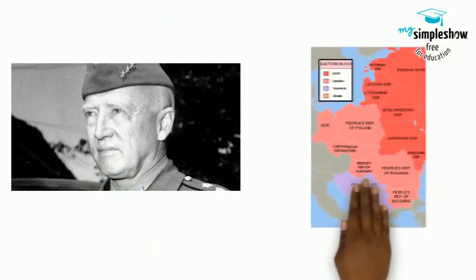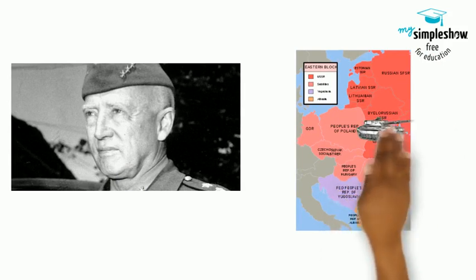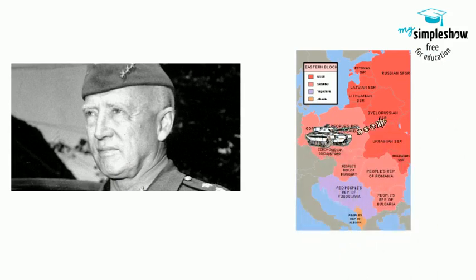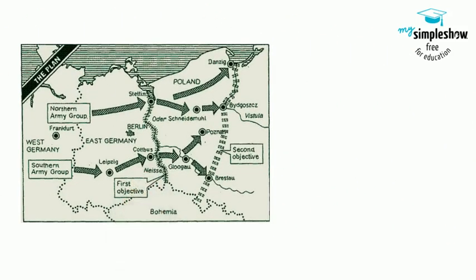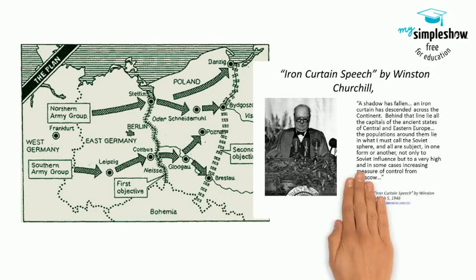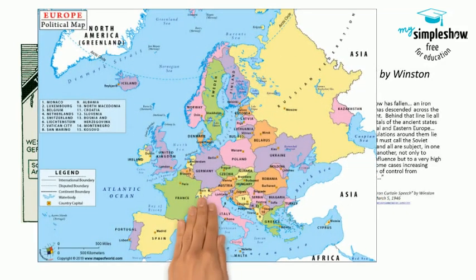General George S. Patton had been removed from leadership by General Eisenhower for calling on America to turn the military already in Europe on the Soviets. The British themselves had a plan called Operation Unthinkable that also called for an attack on the USSR to push them out of Eastern Europe. However, most people in the world didn't have the stomach for a third major war in less than 30 years, and stalemates set in. Churchill told a crowd in Missouri in 1946.